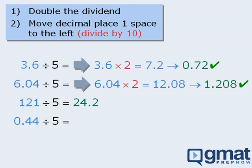Next, 0.44 divided by 5. This equals 0.088.